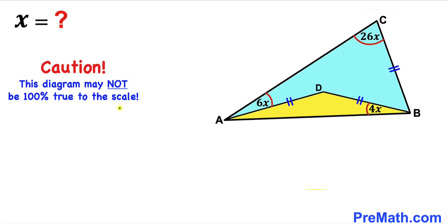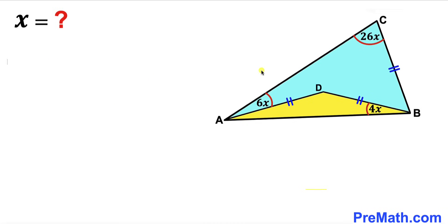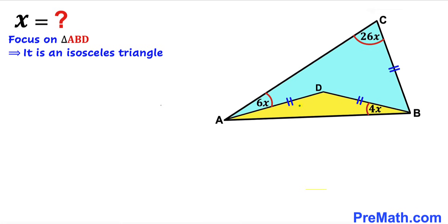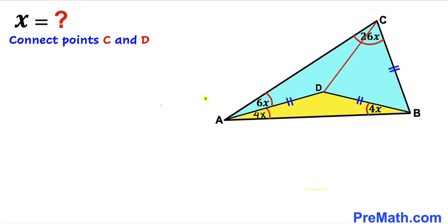Please keep in mind that this figure may not be 100% true to scale. Let's get started. Our very first step: let's focus on yellow triangle ABD. We know this is an isosceles triangle since side AD equals side BD. Therefore, the base angles must be equal — if angle ABD is 4x, the other base angle must also be 4x.